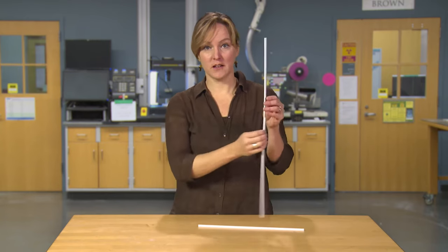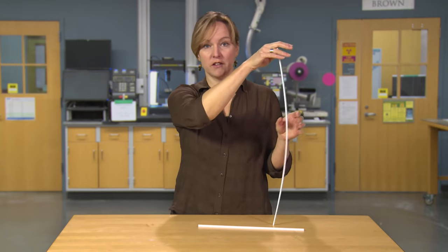Will a longer column buckle at a higher or lower load than a shorter column? And how much of a factor is the length in that, in the behavior? Other things that we can consider are material type, cross-sectional shape, and cross-sectional area. Which of these will have an effect on the load at which a column will buckle?